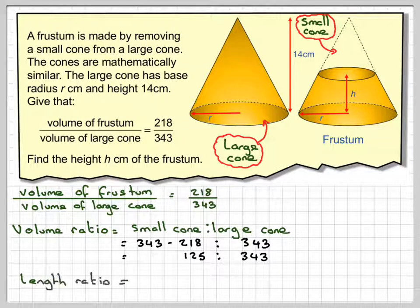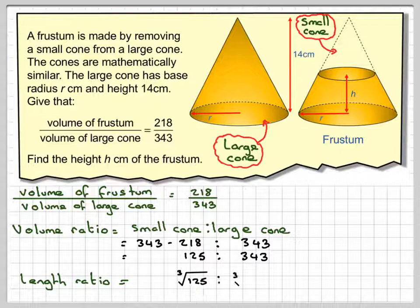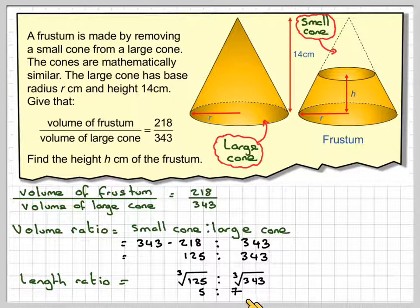The length ratio is going to be equal to the cube root of 125 to the cube root of 343. The cube root of 125 is 5, and the cube root of 343 is 7.